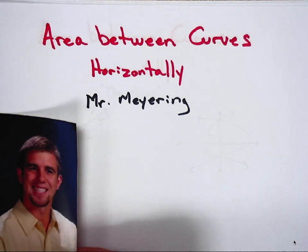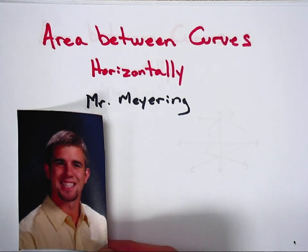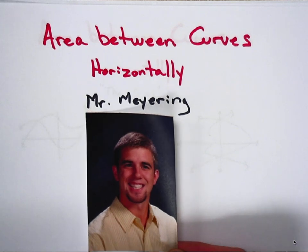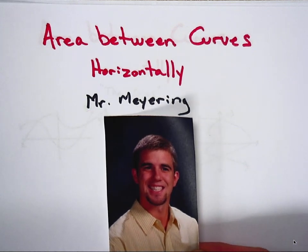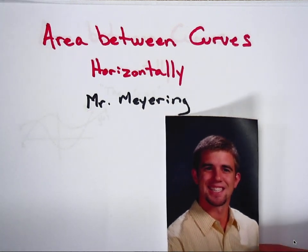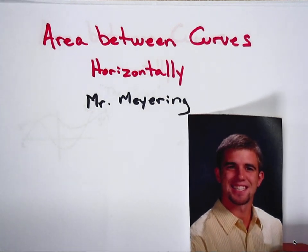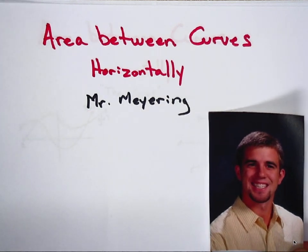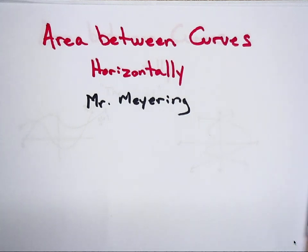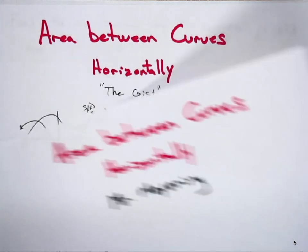We talked about that recently, but today we're going to talk about what happens if you have to chop up your curves horizontally instead. We've only looked at vertical cross-sections so far, so we'll look at a couple different examples and why horizontal cross-sections are important for us to be able to do as well.